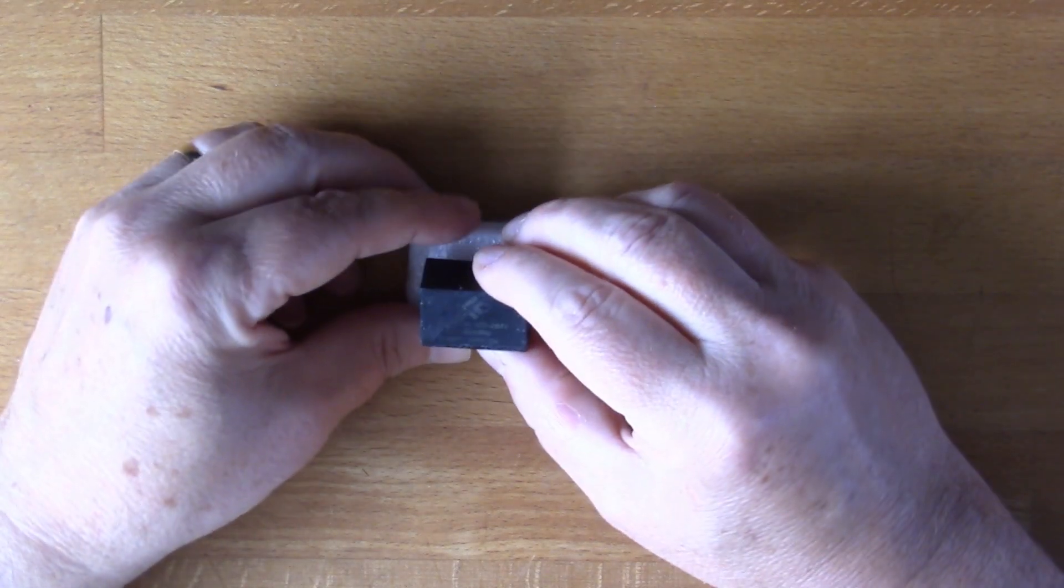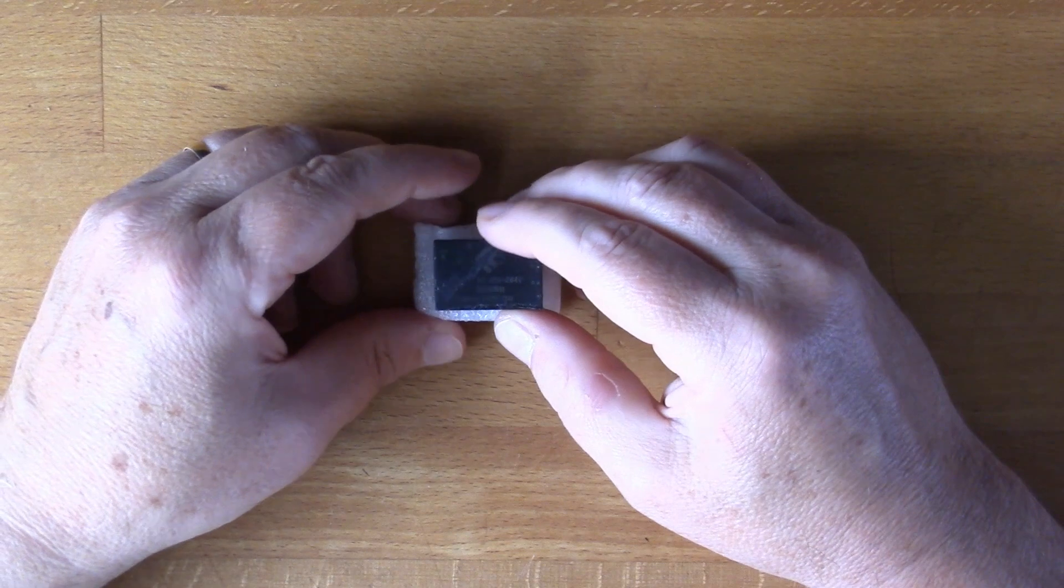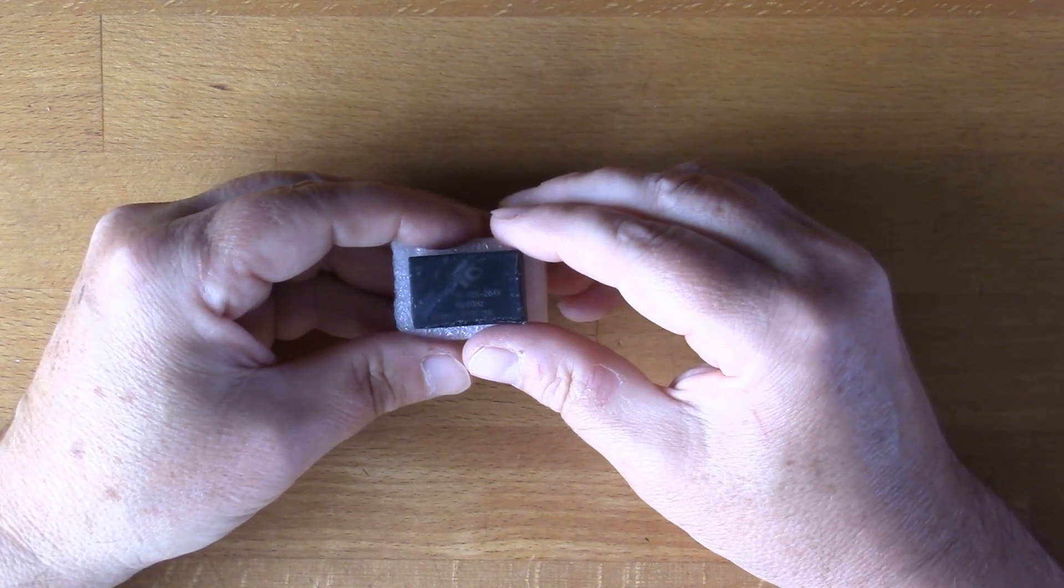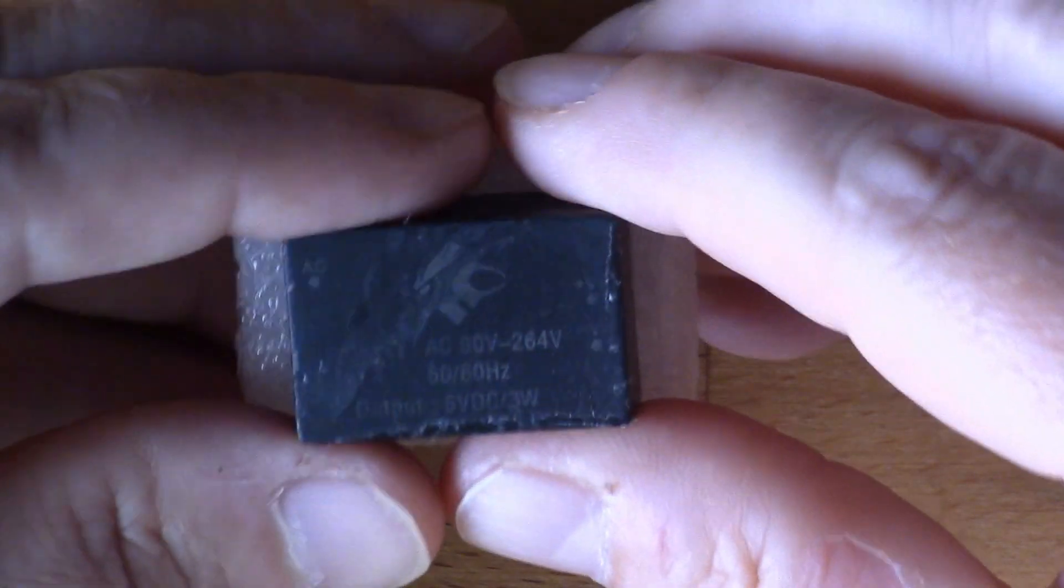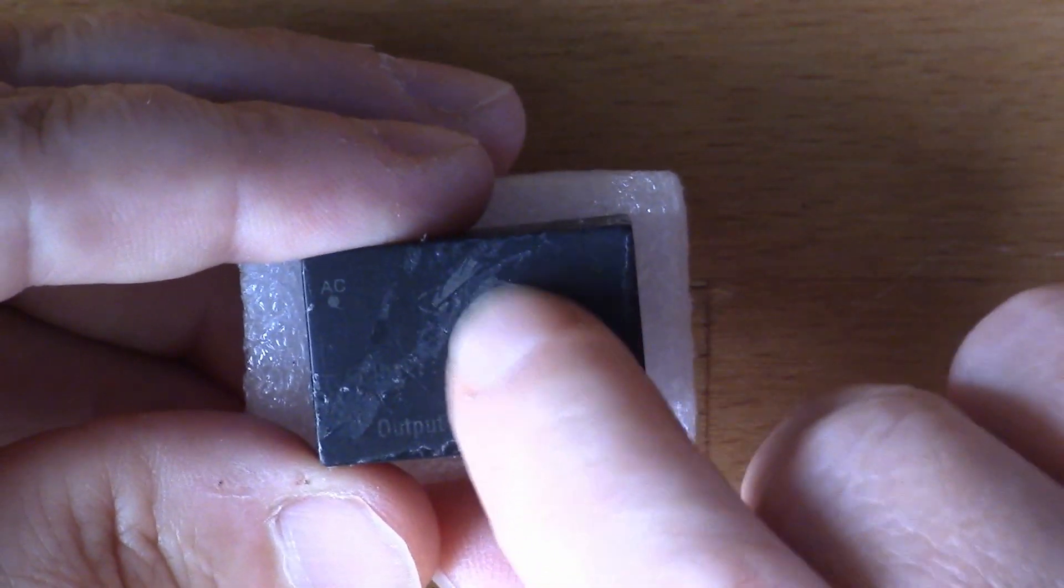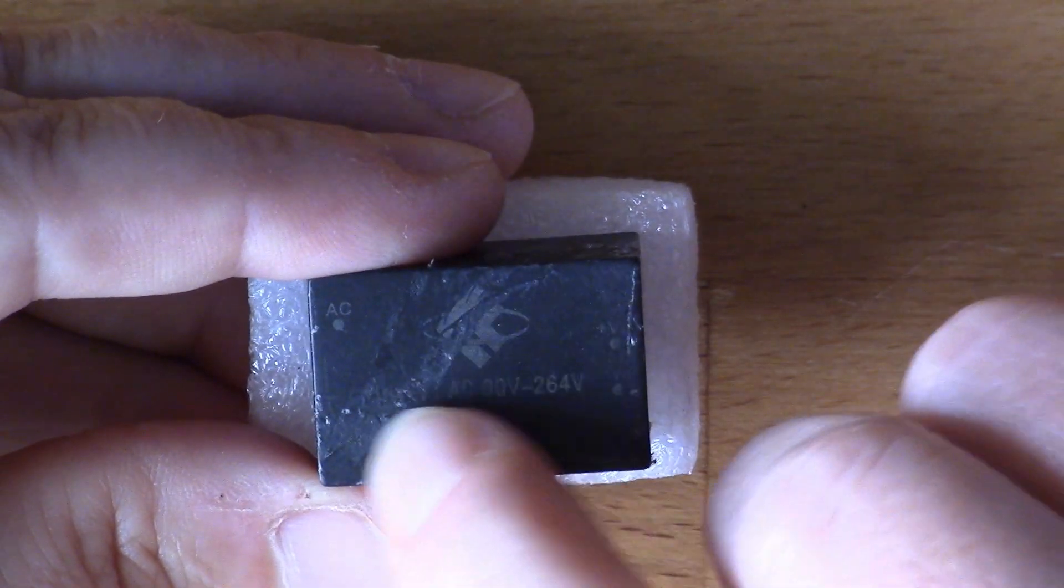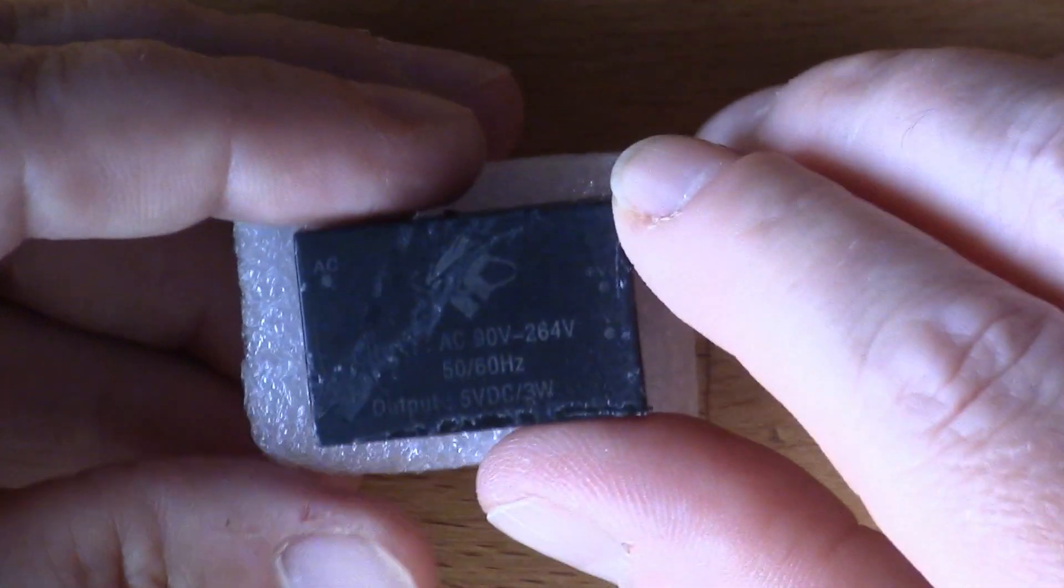This device here is a self-contained power supply. As you can see it's very small and has some writing on it. Unfortunately it's got some discoloration markings on here.